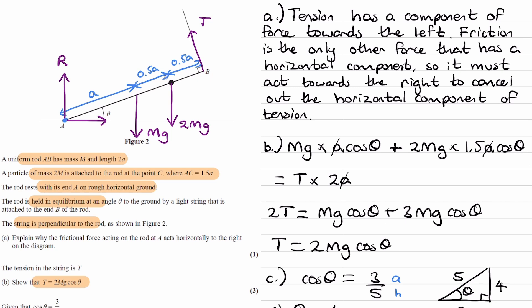If I draw a line up here and across there, this would also be theta. I'm going to move this T to the left. So this will also be theta. Using that triangle at the top, we can say that the vertical component of tension is T cos theta, and the horizontal component is T sin theta.